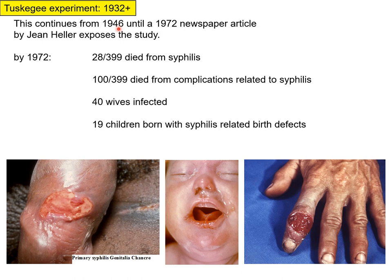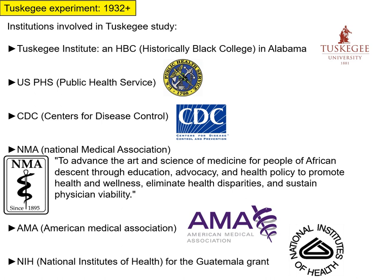This study then continued from 1946 — when penicillin was known to be potentially effective — all the way until 1972, when a newspaper article by a reporter exposed it. By 1972, 28 of the original 399 individuals with syphilis had died from it, 100 had died from complications related to syphilis, 40 had infected their wives, and 19 children were born with syphilis-related birth defects. They just continued to watch these people until 1972, which is morally and ethically unacceptable.